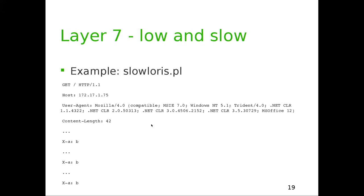Now for layer 7 attacks. An example is Slow Loris, which was in the media. It establishes a full layer 7 TCP/IP connection, sends the usual headers, then pauses and keeps sending headers slowly — just keeping the connection open. If you do this enough times, and Apache in default settings can only handle maybe a thousand connections, you fill up the connection queue and make the server unavailable.